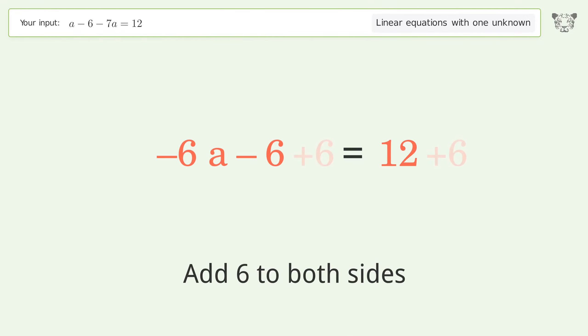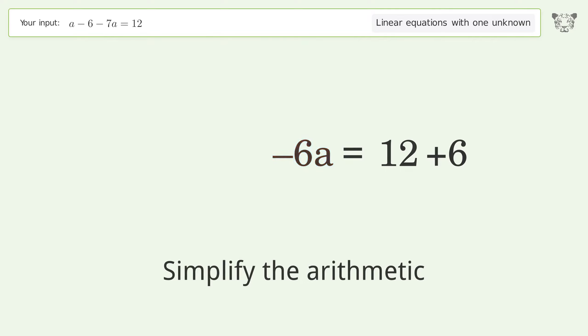Group all constants on the right side of the equation. Add 6 to both sides. Simplify the arithmetic.